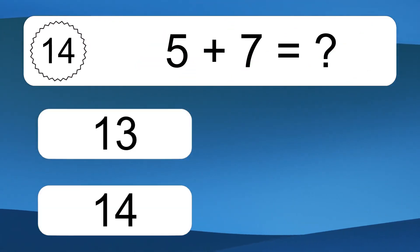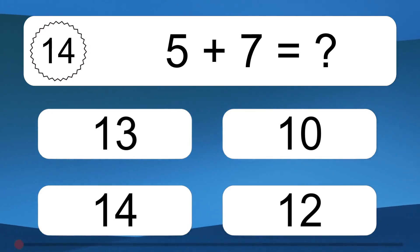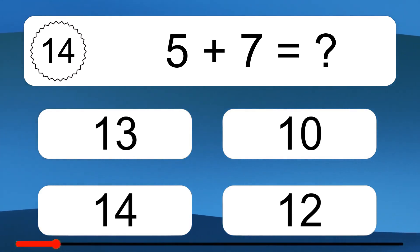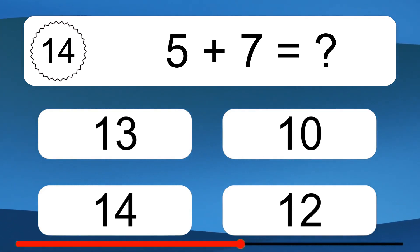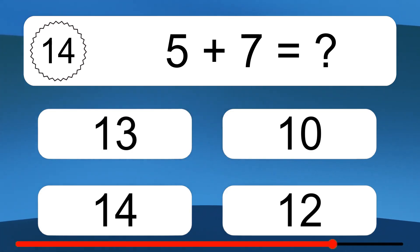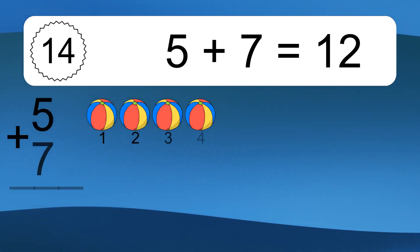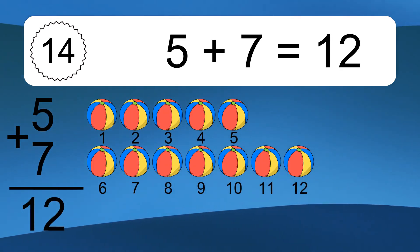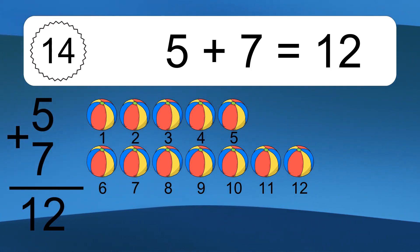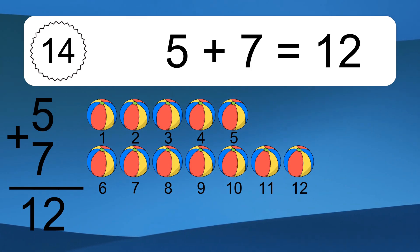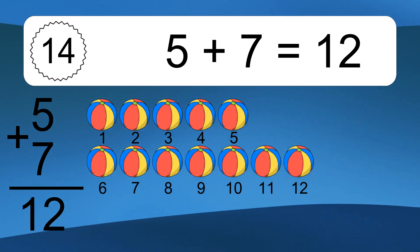5 plus 7 equals what? 5 plus 7 equals 12. Let's count it. 1, 2, 3, 4, 5, 6, 7, 8, 9, 10, 11, 12.